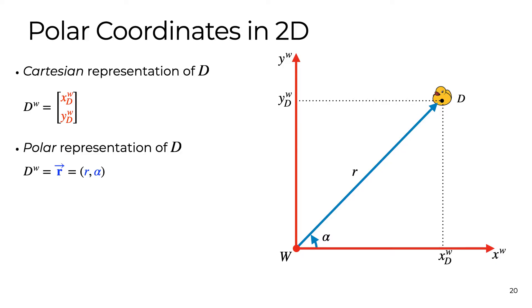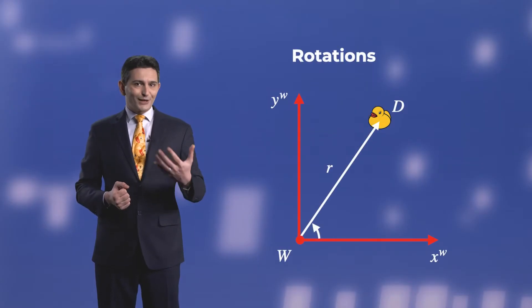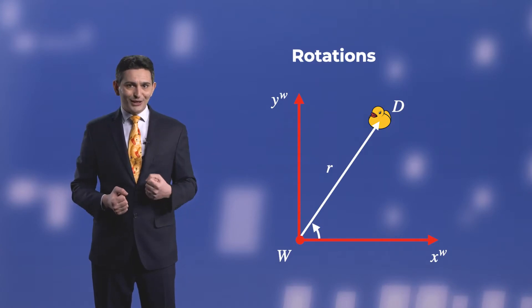Before looking at the pure rotation case, it's useful to quickly recall polar coordinates. Given a point in R2, instead of using X and Y coordinates, it can be expressed by a distance from the origin and an angle with respect to the X axis. Recalling trigonometry, we can then express the Cartesian coordinates X and Y with respect to R and alpha. Polar coordinates make our lives easier in describing rotations.